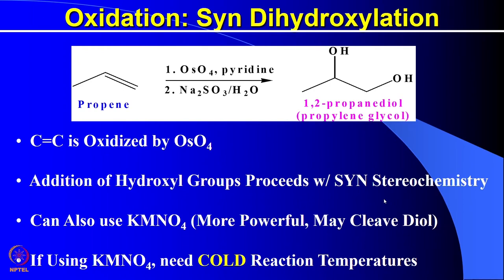Now let us see what happens when you try to oxidize a C-C double bond — that means oxidation of alkenes. There are various oxidizing agents, for example osmium tetraoxide, potassium permanganate, potassium dichromate, and so on. When you do an oxidation reaction on a C-C double bond like propene using osmium tetraoxide and pyridine, you get a diol. The addition of hydroxyl groups proceeds with syn stereochemistry and it can also be done using potassium permanganate, which is more powerful.